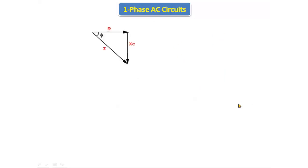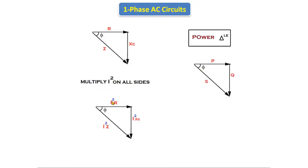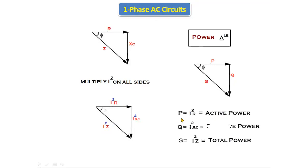This is about the impedance triangle. Now let's see the power triangle. To get the power triangle, we multiply I squared on all sides of the impedance triangle. If we multiply I squared on all sides, we get I²R, I²·Xc, and I²·Z.